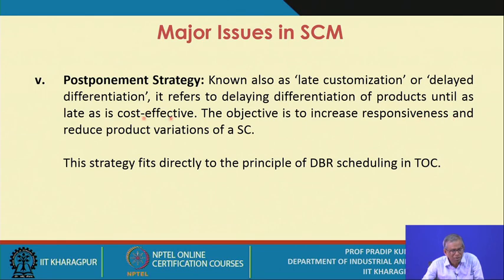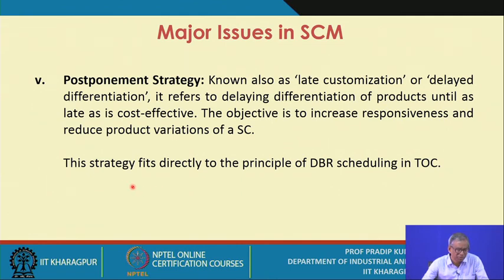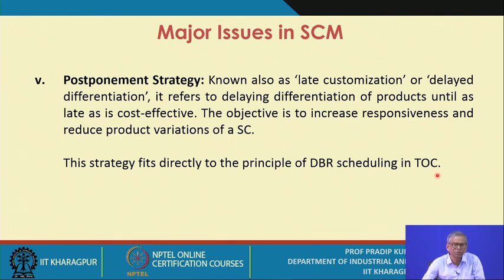The objective of postponement strategy is to increase responsiveness and reduce product variations in a supply chain. There are many case studies where the postponement strategy has become an effective means to improve supply chain performance. This strategy feeds directly into the principles of DVR scheduling in Theory of Constraints (TOC) — there are scheduled release points in the network where you control both the quantity and the timing of when items should be released.